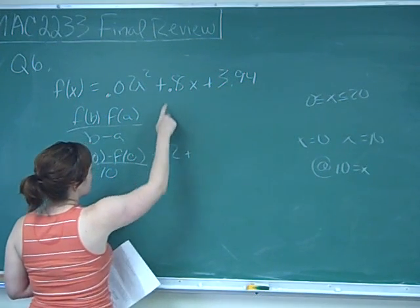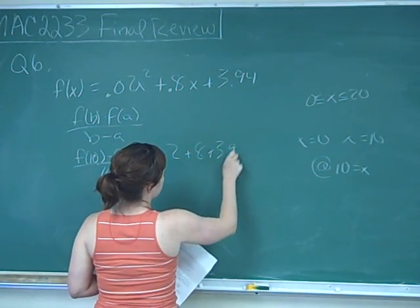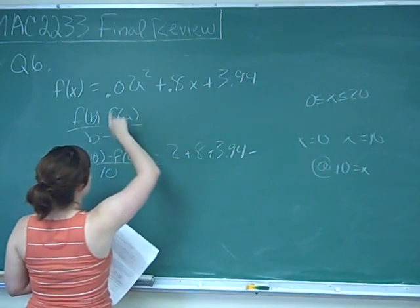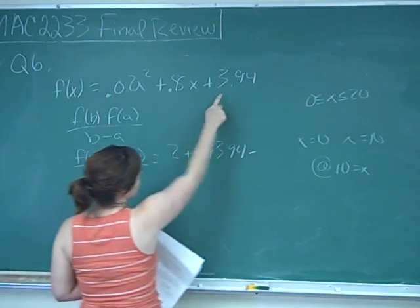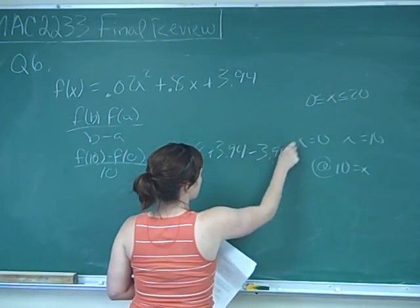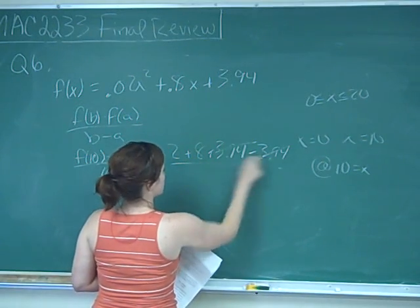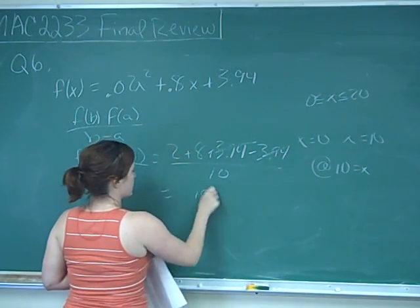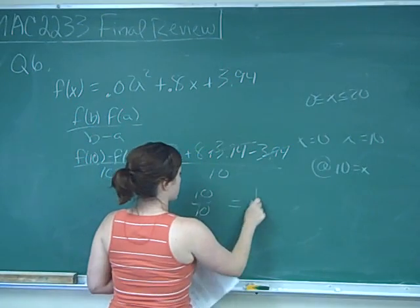Plus 10 times 0.8 is just 8, plus 3.94, minus f of 0, which would be 0 plus 0 plus 3.94. This is all over 10, so we get 10 over 10, which is equal to 1.